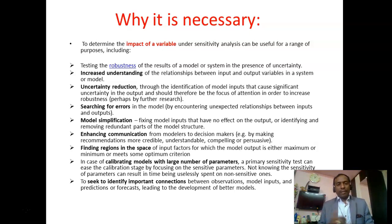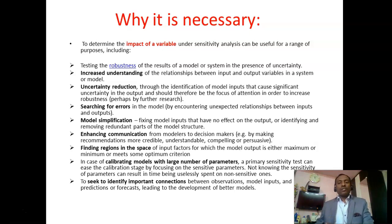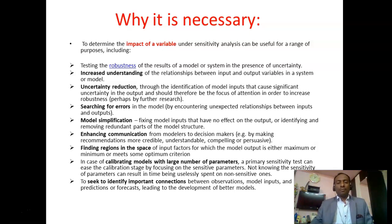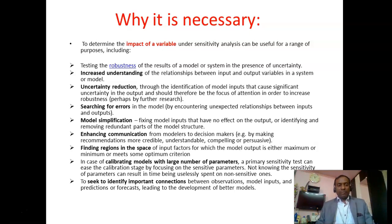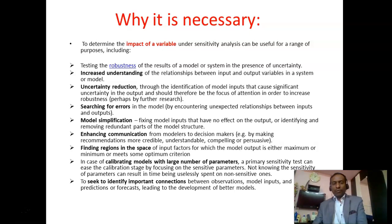Searching for errors in the model by encountering unexpected relationships between input and output allows us to simplify the model — by fixing model inputs that have no effect on the output, or identifying and removing redundant parts of the model structure. We know there are some parts that are not needed; we can remove those and keep only specified things in our model. This enhances communication from the modeler to the decision maker by making recommendations more credible, understandable, and compelling. It also helps find regions in the space of input factors where model output is maximum or minimum to meet some optimal criteria, and to identify important connections between observations, model inputs, predictions, and forecasts leading to the development of better models.